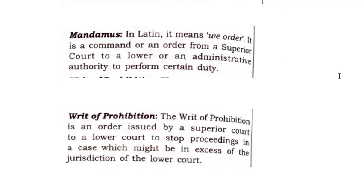Next is the writ of prohibition. The writ of prohibition is an order issued by the Superior Court to the lower court to stop proceedings in a case which might be in excess of the jurisdiction of the lower court. If the Supreme Court finds that a matter is not coming under the jurisdiction of a particular court, it can ask that court to stop the hearing. That is called the writ of prohibition.